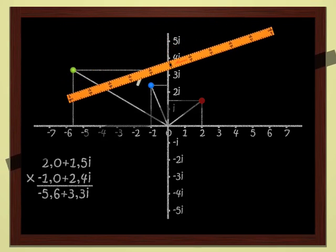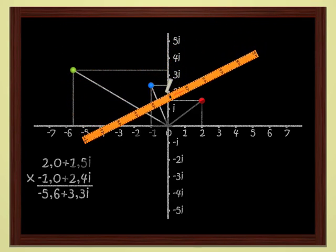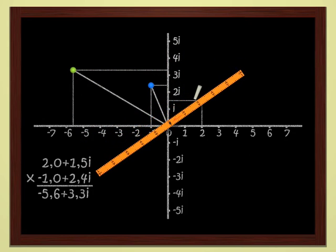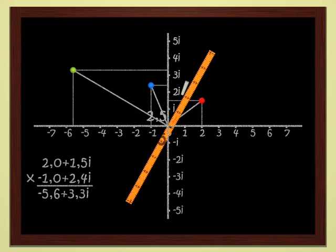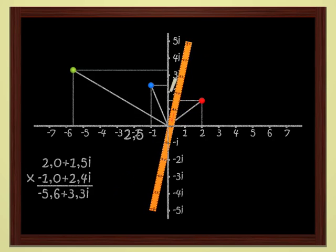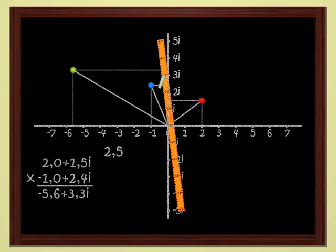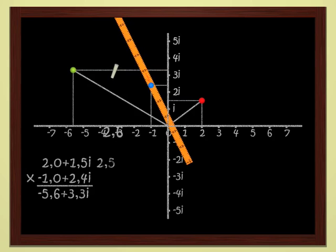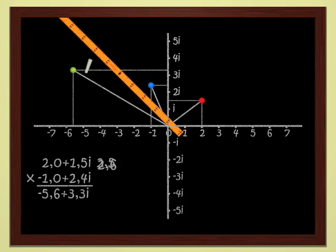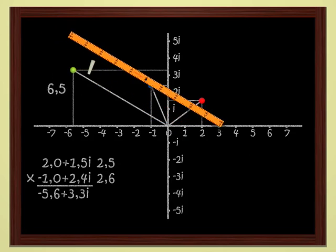Let's use the ruler to determine the modulus of the red point, which is 2 plus 1.5i. Let's see. It measures 2.5. The modulus of 2 plus 1.5i is therefore 2.5. For the blue point, I get 2.6. And for the green point, which is the product of the two points, I have 6.5.